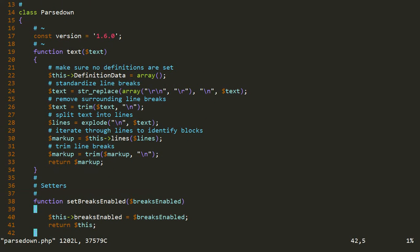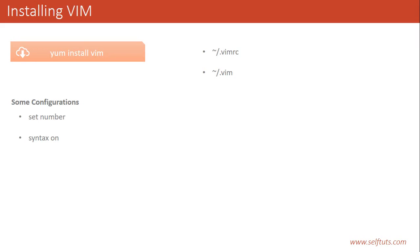After removing syntax off, opening parsedown.php shows that syntax highlighting is present again. Another configuration is set backspace=2. In some versions of Vim there is unexpected behavior with backspace, so you want to explicitly set the backspace value. If you find any unwanted behavior while using backspace in Vim, provide the setting set backspace=2 in your .vimrc file. You should now understand what the .vimrc file is and what the .vim folder is — we'll see the .vim folder when we use plugins. If you like this channel, please subscribe, and if you like this video, please give a thumbs up. Thank you.